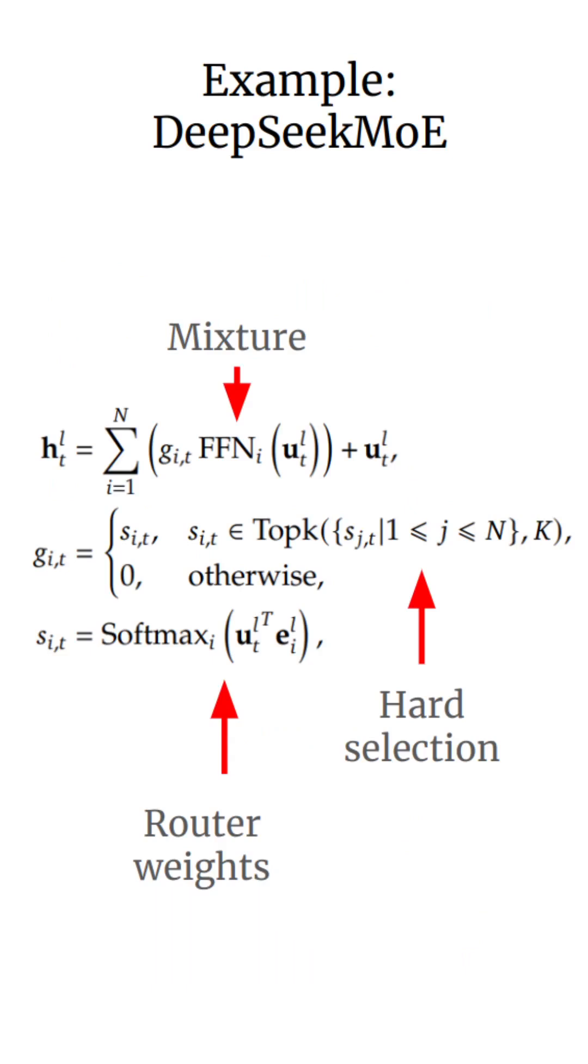A popular choice for this is a style known as the DeepSeek mixture of experts architecture. In this equation, they first compute a softmax over the experts where the input u is dot producted with one embedding for each of the given experts. We then use a softmax to compute this value s. The value s is then passed to a top k function and passed through for the top highest scoring k experts.